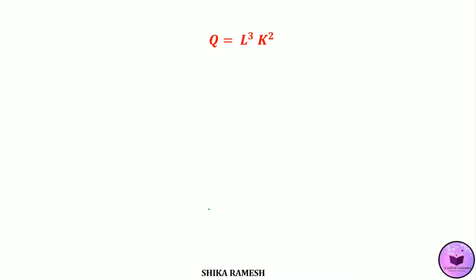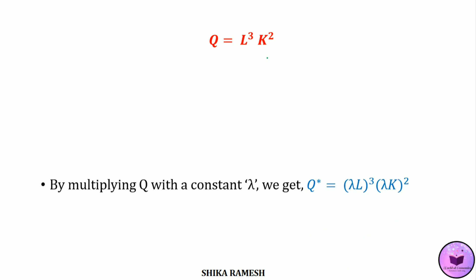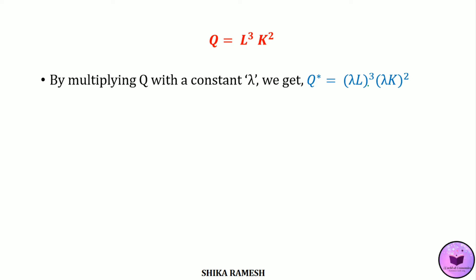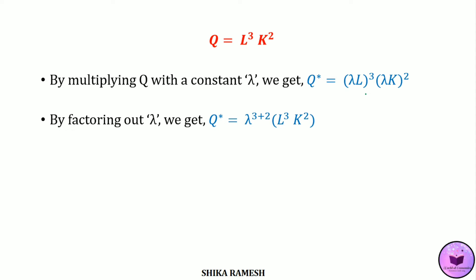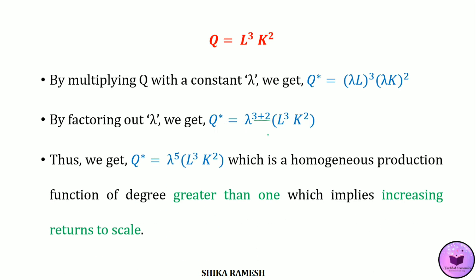Let us take another example: Q = L³K². We multiply the production function with a constant lambda, giving Q* = (λL)³ × (λK)². Opening the brackets and factoring out the constant, we get Q* = λ raised to (3 + 2) times L³K². Since the value of N equals 5, which is greater than 1, this production function is a homogeneous function implying increasing returns to scale.